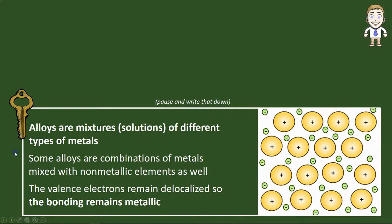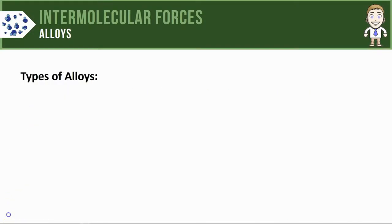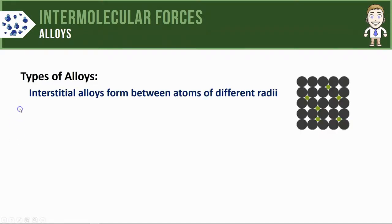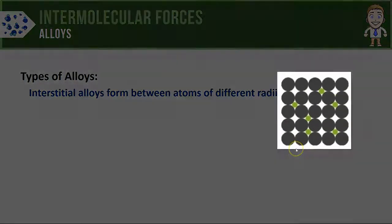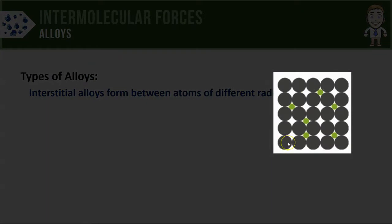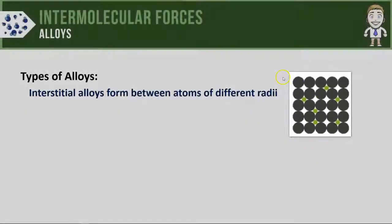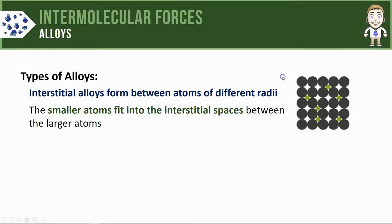There are two main categories of alloys that you have to know for AP chemistry. The first are called interstitial alloys, and these form between atoms of different radii. In the model shown here to the right, you can see the larger atoms shown in gray and these smaller atoms shown in green. In these alloys, the smaller ones fit into the interstitial spaces between the larger atoms.